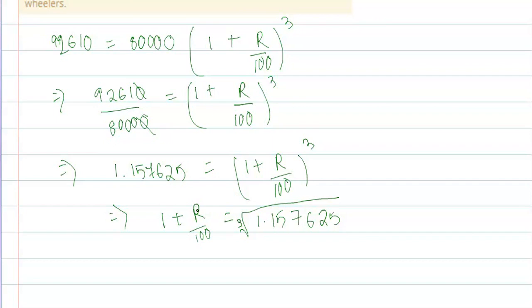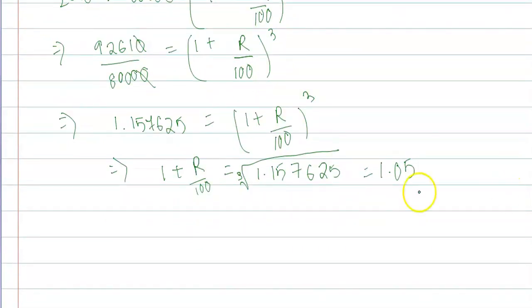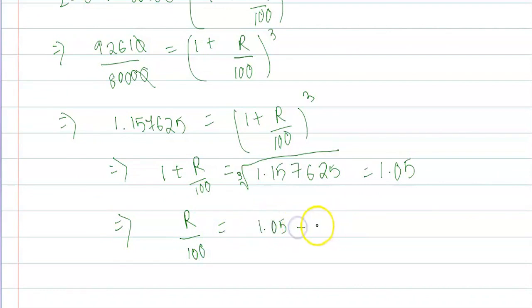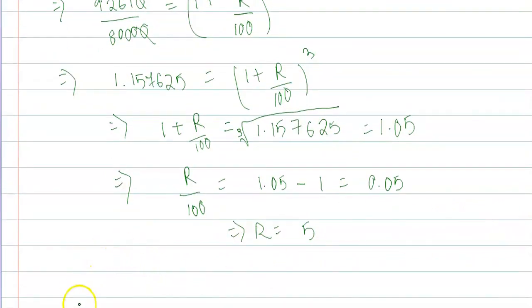The result is 1.05, so r/100 = 0.05, which means the annual rate of growth is 5%.